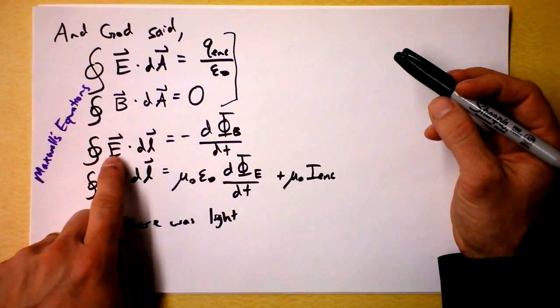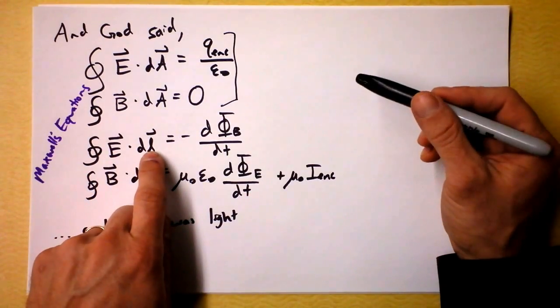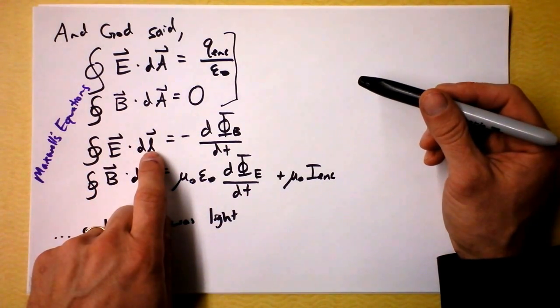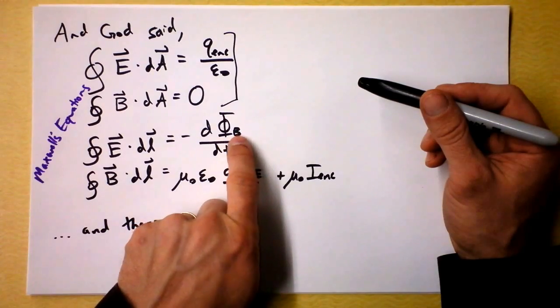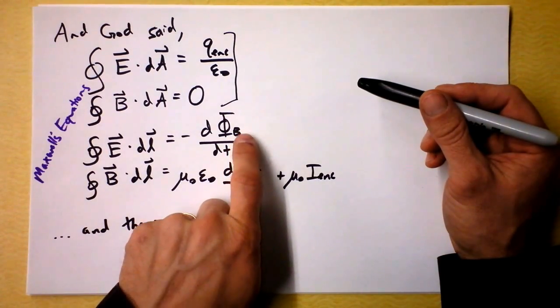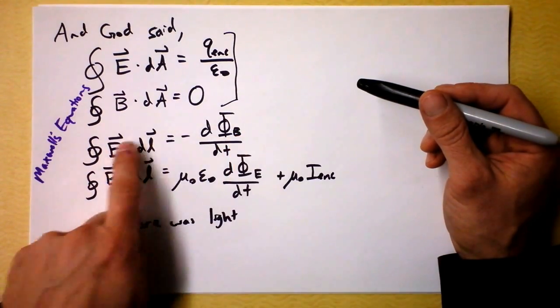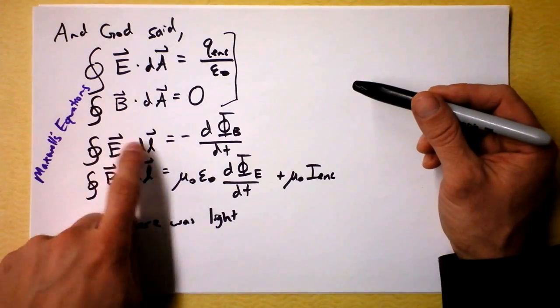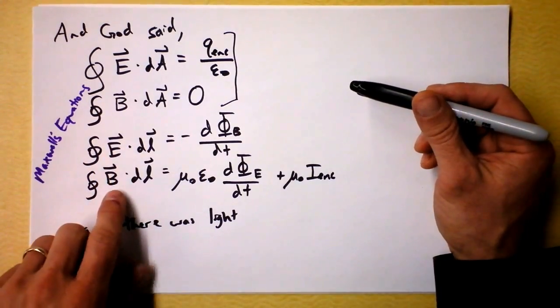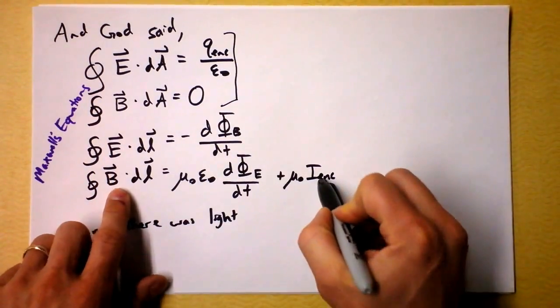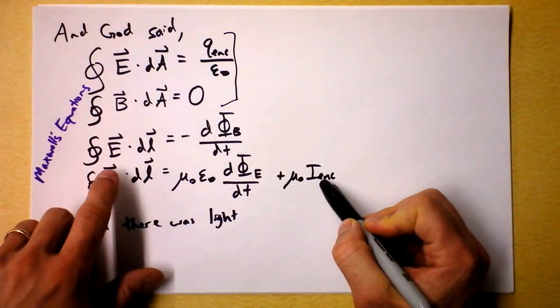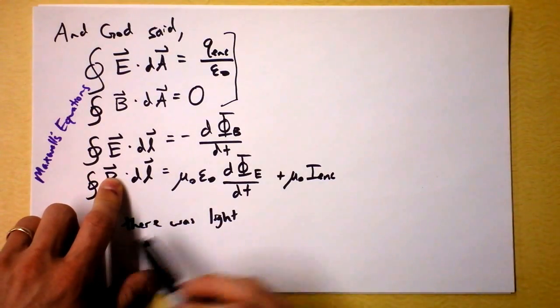This is the statement that electric field dotted along some length... wait a second, this says that a changing magnetic flux induces a voltage. Oh yeah, sure, okay, beautiful. And this says that if I have a current, then I'll get a magnetic field going around in a loop around it. That's also lovely.